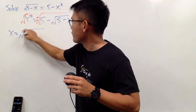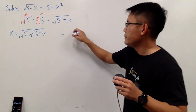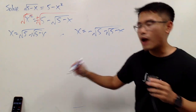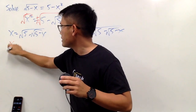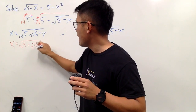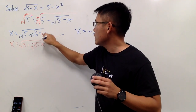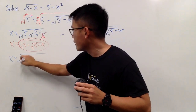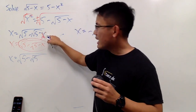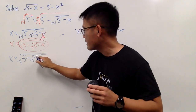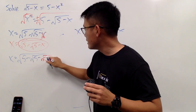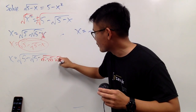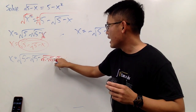So x equals the positive version of the square root of 5 minus the square root of 5 minus x. On the other hand, x equals the negative version of the square root of 5 minus the square root of 5 minus x. Now I'll write the positive case in red: x equals the square root of 5 minus the square root of 5 minus x. Because right here we have this x, I can substitute it right back in for itself. So x is actually nothing but the square root of 5 minus the square root of 5 minus the square root of 5 minus... and so on — an infinite nested radical.